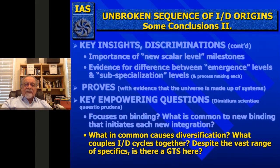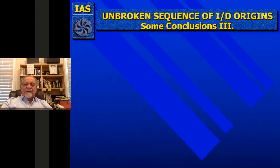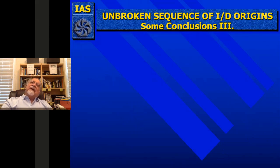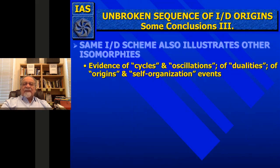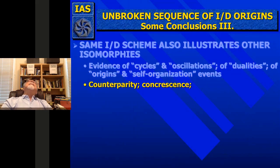If I showed you those integration-diversification cycles again, I could say that going from the diversification-fragmentation to the integration is an emergent act, and there is a commonality to how that happens—I propose anyway—and that's a conjecture. That's the theory of emergence we're going to cover next time. The same ID scheme also illustrates isomorphies: it involves cycles, oscillations, dualities, origins, and self-organization events—all of which are isomorphies in my theory. It also involves counter-parity and concrescence, which I called 'metacrescence' in one of the 1985 papers.